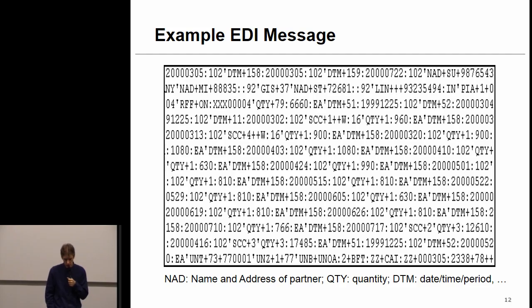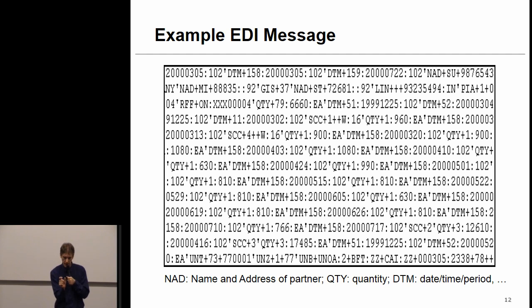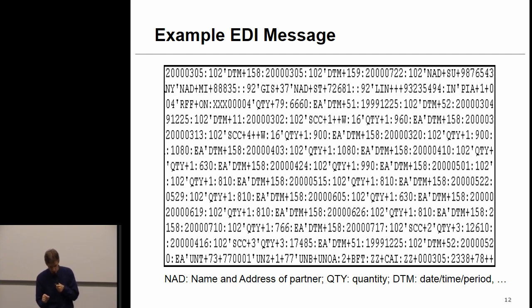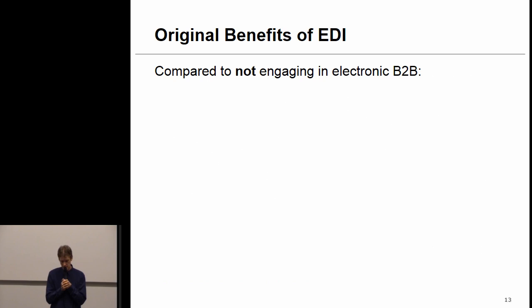An EDI message looks very much like XML — it has delimiters and tags like NAD for name and address of partner, date delimiters, quantity delimiters, and all kinds of other delimiters that are part of the standard and can be used to exchange information in a standardized way.